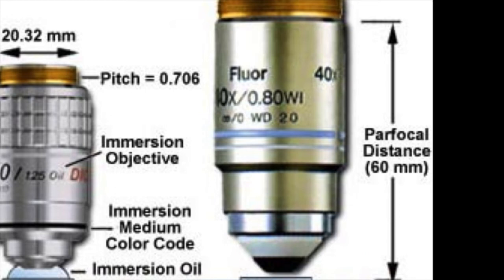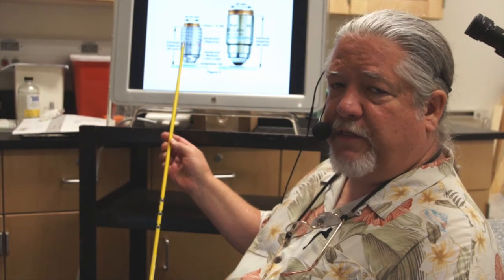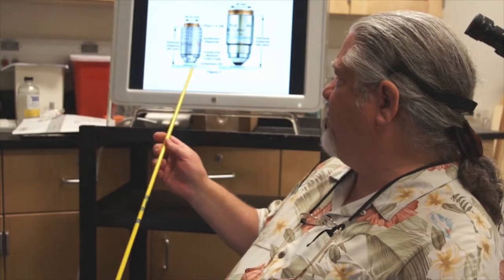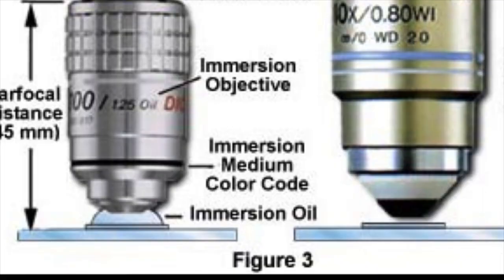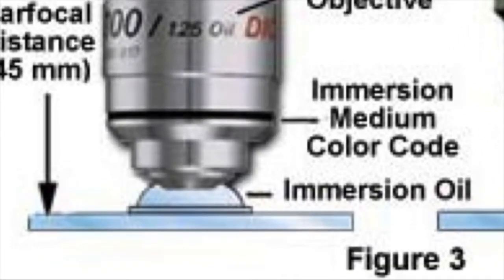Another important feature is that these are now infinity-corrected objectives, whereas before they were 160-millimeter tube length. Another important feature for you to see is the immersion. Here is an immersion objective where we have a drop of immersion oil between the objective and the cover slip that's on your slide, which contains your specimen. You might be using immersion oil, water immersion objective, or glycerol immersion objective. All three are available on the Leica confocal microscope.